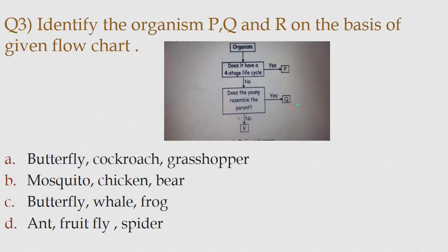Option B: Mosquito, chicken, bear. Option C: Butterfly, whale, frog. Option D: Ant, fruit fly, spider.